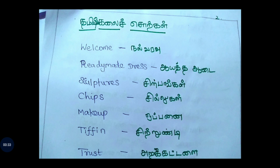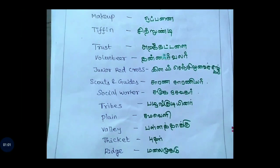Ready-made dress is 6. Cultures is 6. Chips is 6. Mac-up is 6. Tiffen is 6. Trust is 6. Volunteer is 6. Junior Red Cross is 6. Scouts and Guides is 6. Social Worker is 6.